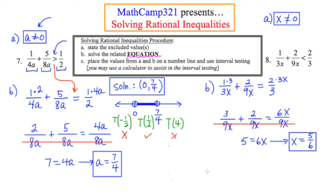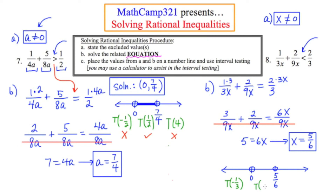Now I make the number line with critical values 0 and 5 sixths. Since x can never equal 0, that point is open. Because the original inequality does not have an equal sign, 5 sixths is also open. For test values: I'll pick negative 1 third for the left region, positive 1 third for the middle, and 2 for the right region.